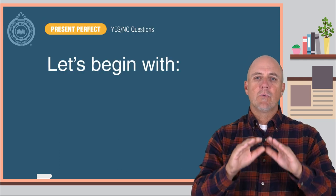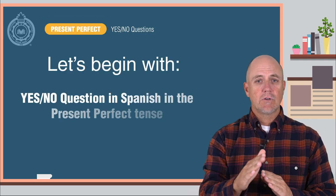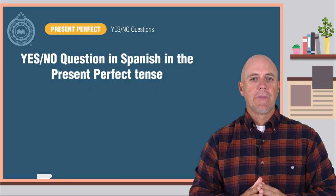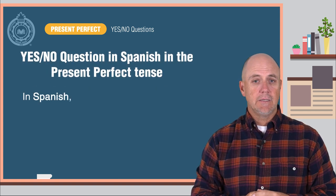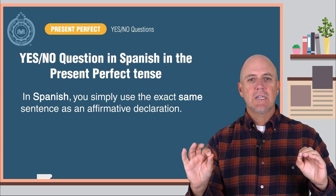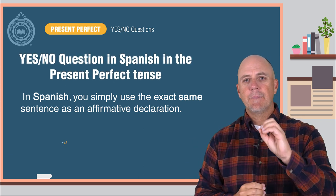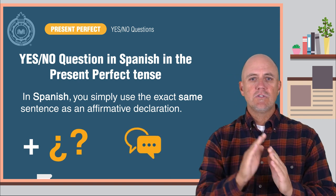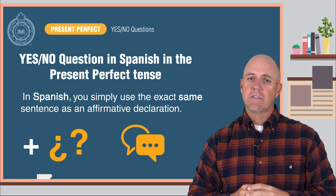Let's begin with what you already know — how to ask a yes-no question in Spanish in the present perfect tense. In Spanish, it's pretty easy. You simply use the exact same sentence as an affirmative declaration, except that you add question marks, and when you speak, you change the intonation of your voice.